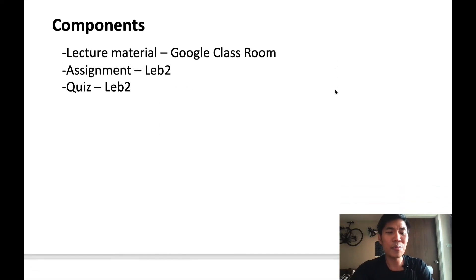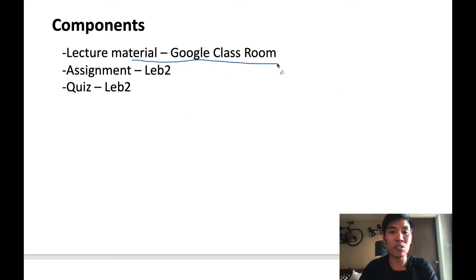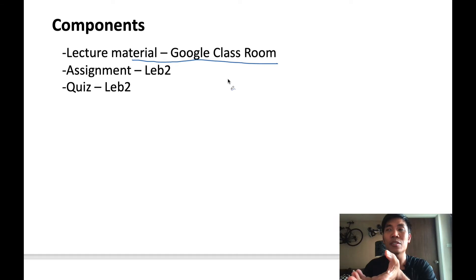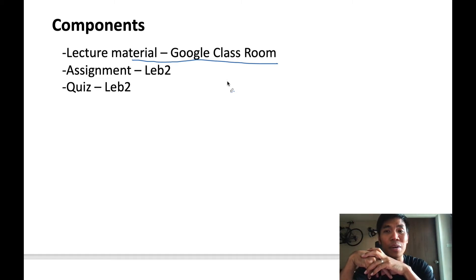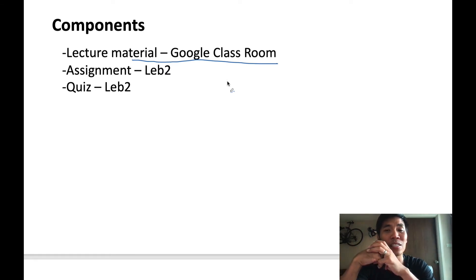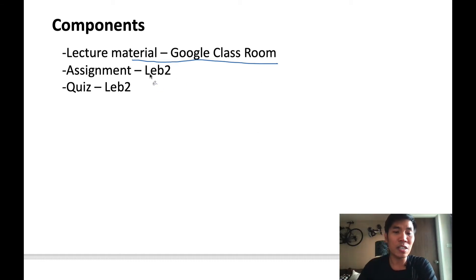The components of this course are composed of three parts. The first is the lecture material provided in Google Classroom — handout PDFs and quick videos. Or maybe some appointments: if you have any questions, the lecturer will provide a live session via Zoom. You can also post in Google Classroom to ask questions about anything unclear from the lecture.